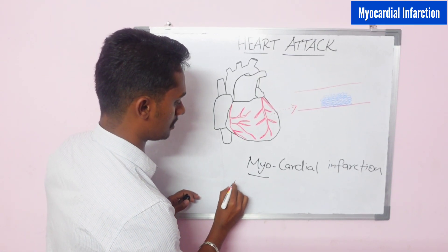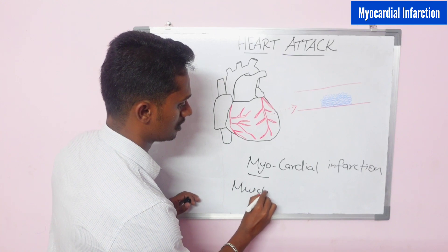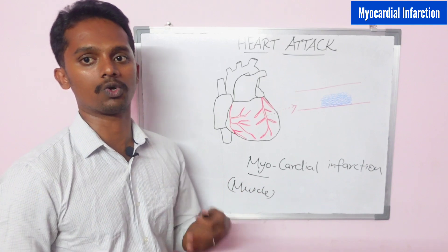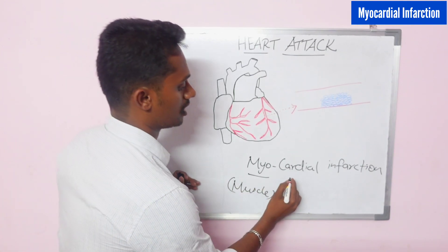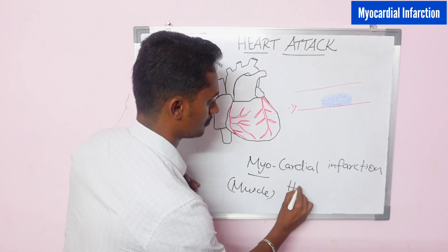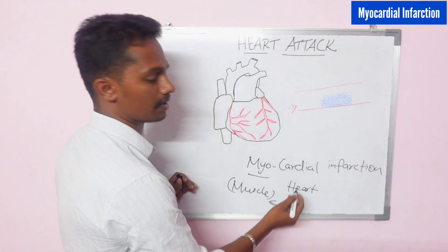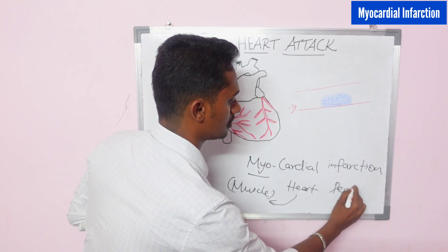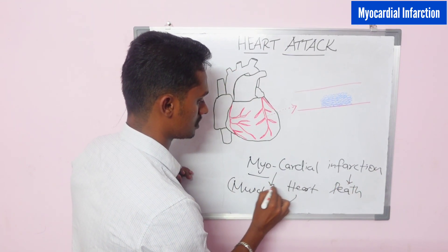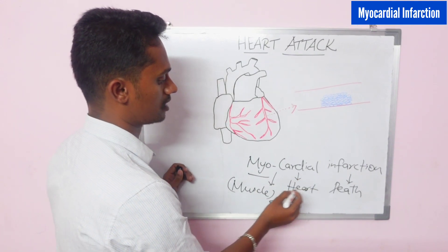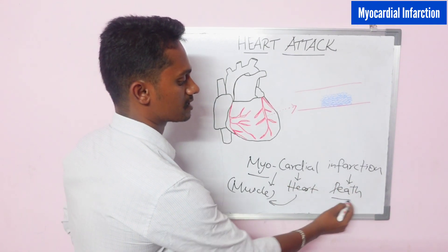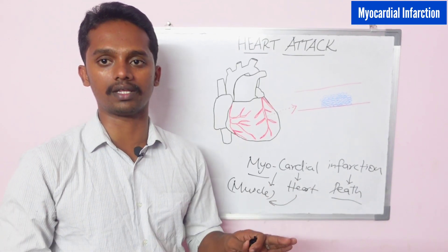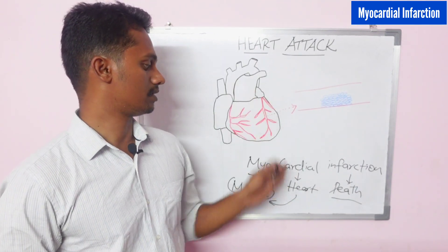So what is myocardial? Myocardial refers to cardiac muscle. The term myocardial is broken down as: myo means muscle, cardia means heart. So myocardial means heart muscle. And infarction means death. So myocardial infarction means death of the heart muscular tissue.